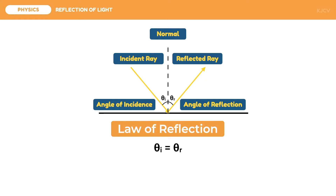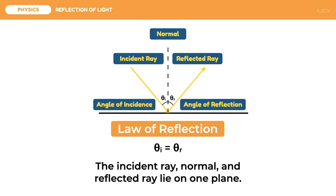Aside from this, the law of reflection also states that the incident ray, normal line, and the reflected ray all lie on one plane. Let us look at some problem examples for the law of reflection.